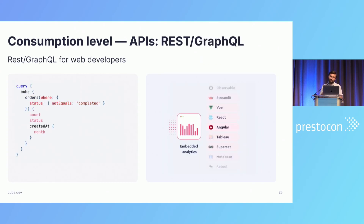The other API — REST and GraphQL — is very helpful when you're trying to build an embedded analytics solution where you want to build a custom UI and have a really native experience for your application and your customers.